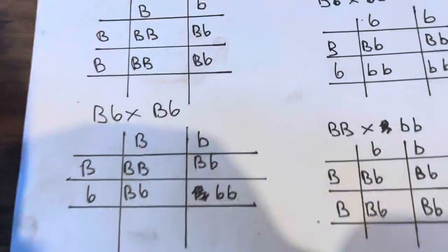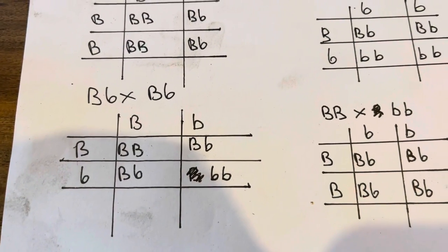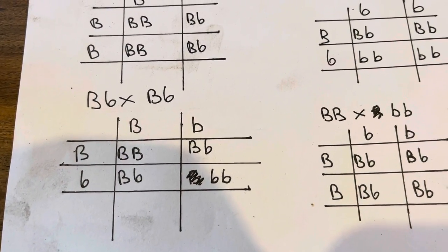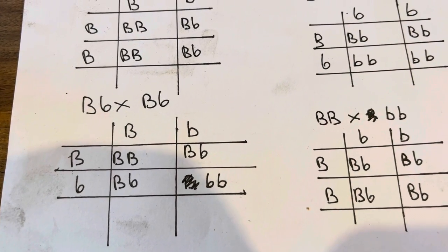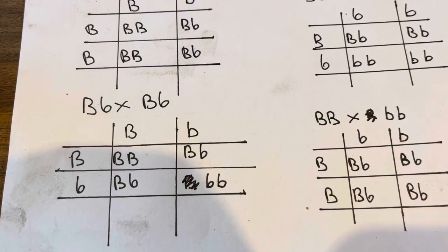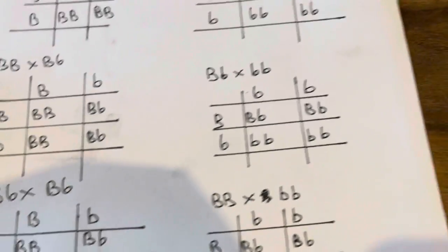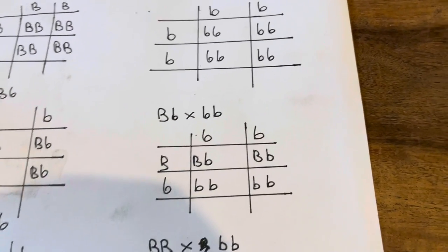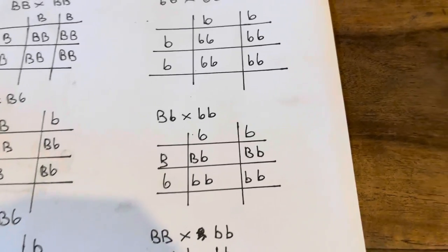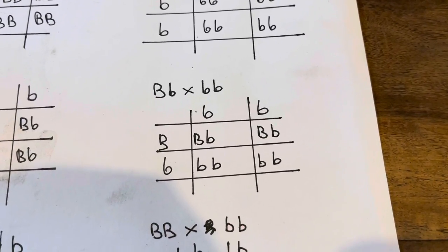Then you got two liver carriers. So then you'll have 25% of the puppies will be dominant black, 50% will be liver carriers, and 25% would be liver. Obviously this is genetics, so it's never quite exact, very rare anyway in an actual on-the-ground litter, but this is the way it works.